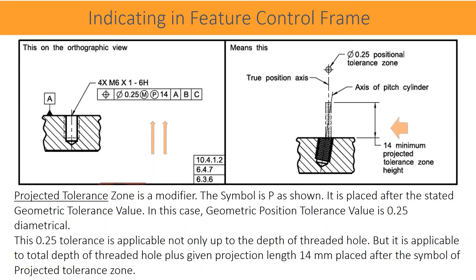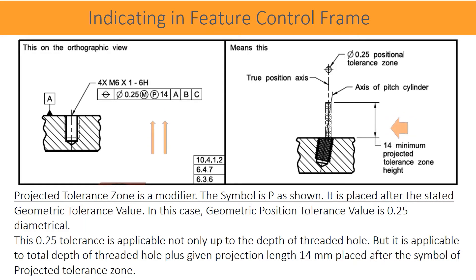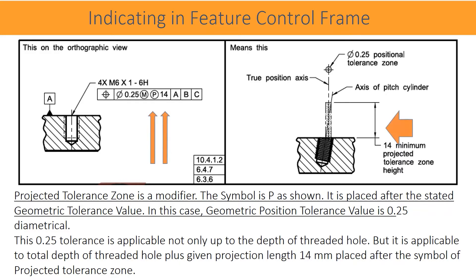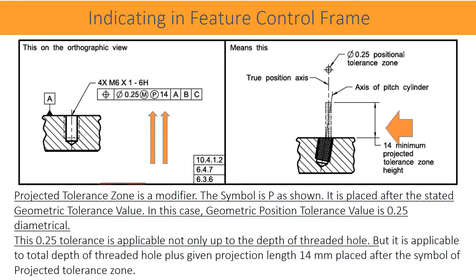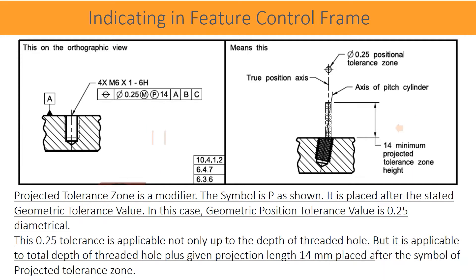Projected tolerance zone is a modifier. The symbol is P as shown. It is placed after the stated geometric tolerance value. In this case, the geometric position tolerance value is 0.25 mm diametrical. This 0.25 mm tolerance is applicable not only up to the depth of the threaded hole, but it is applicable to the total depth of the threaded hole plus the given projection length of 14 mm, placed after the symbol of projected tolerance zone.